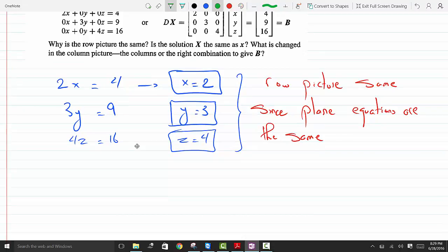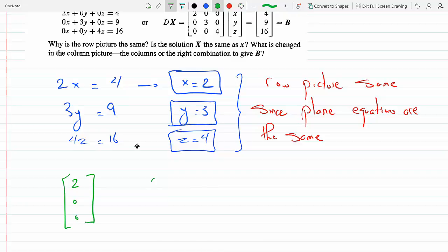The first vector is double now because we have 2, 0, 0, and the second vector is 0, 3, 0—that's three times as much. And the last vector is four times as much.